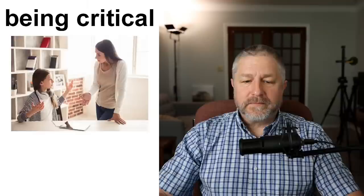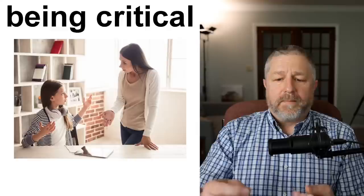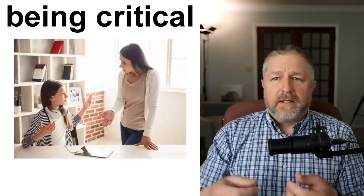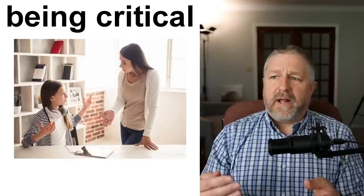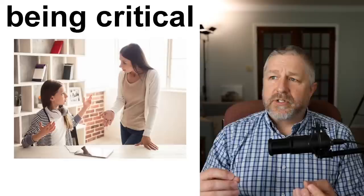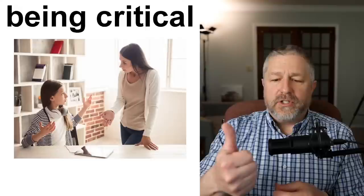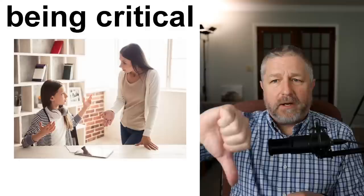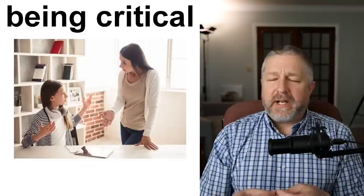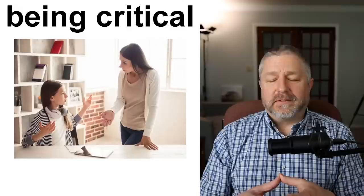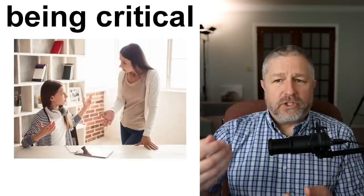Being critical. When you're critical of someone, it means you're telling them what they're doing wrong. It means you always think someone is doing something wrong and you rarely think they're doing it right. When I say 'good job' I'm being positive; when I say 'bad job' I'm being critical. Sometimes it's okay to be critical, but if you're always critical it can be challenging. Some people have parents who never think their adult children are making good decisions and are very, very critical of them. Not very nice.